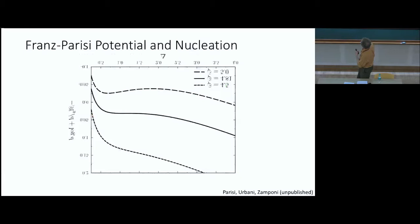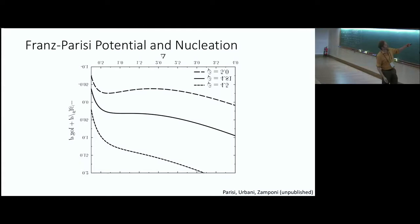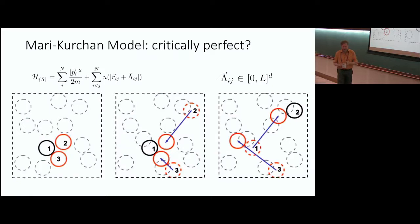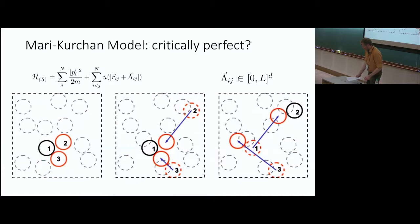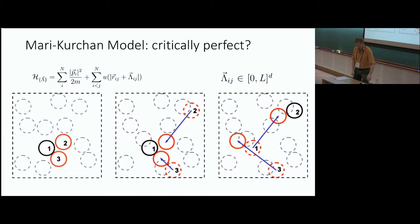I wanted to show my correction from yesterday's class — we found another mistake. This is the Franz-Parisi potential on the right axis. Now, what I really finished the lecture with was introducing the Mari-Kurchan (MK) model, so that today it would look familiar. It's a brilliant masterstroke by Jorge Kurchan in how we think about glasses — and interestingly, the reason I think it's a brilliant masterstroke is not actually the reason why it was invented.